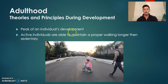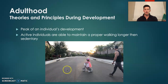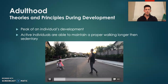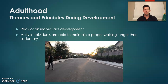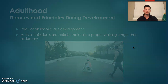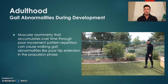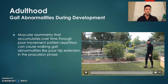Here is an example — it's me, an adult, being able to perform an adequate walking gait sequence, helping perform tasks like watching my daughter cross the street safely. Common abnormalities during this development include muscular asymmetries that, over time, these poor movement patterns and repetition can cause walking gait abnormalities like poor hip extension in the propulsion phase.